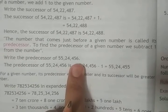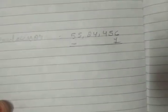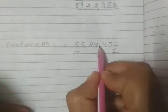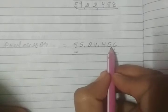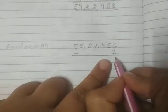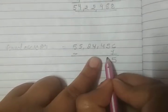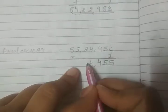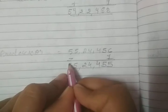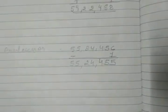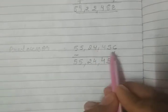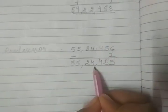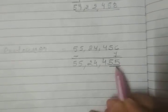We will subtract 1 from 55,24,456. 6 minus 1 is 5. The predecessor of 55,24,456 is 55,24,455.